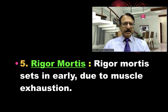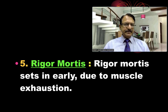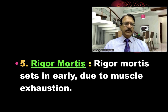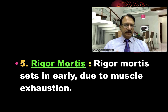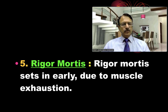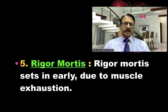Regarding rigor mortis, it sets in early because the body muscles have been exhausted — there will be a struggle to save the life, and that causes rigor mortis to develop early, because the ATP in the muscles has been utilised during the struggle.